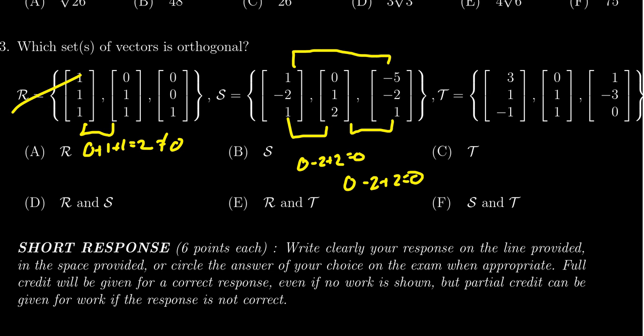Then we have to look at the third pair right here. We're going to get minus five plus four plus one. That's zero. So all three pairs are orthogonal. There's no zero vector in there, so S is definitely going to be an orthogonal set.